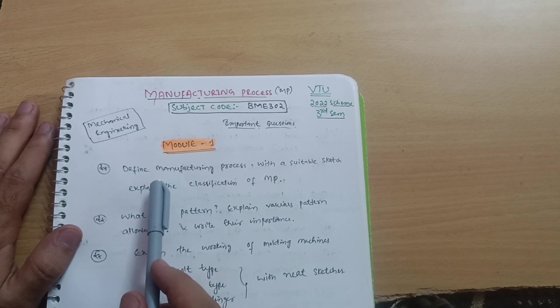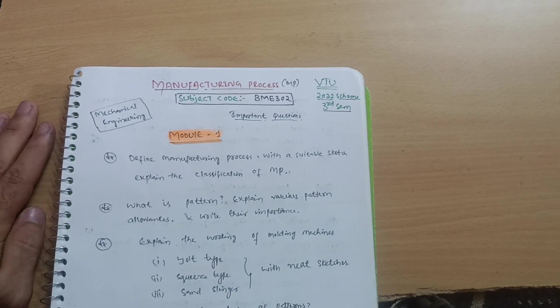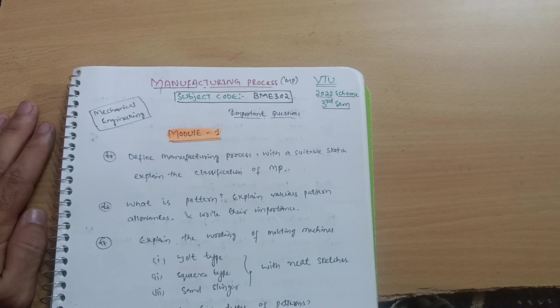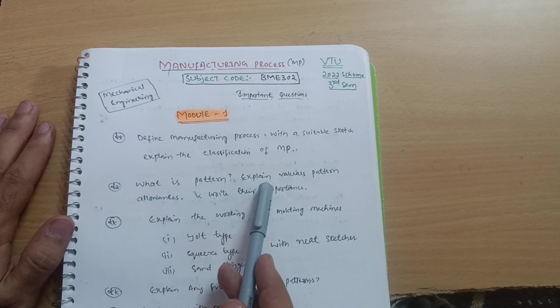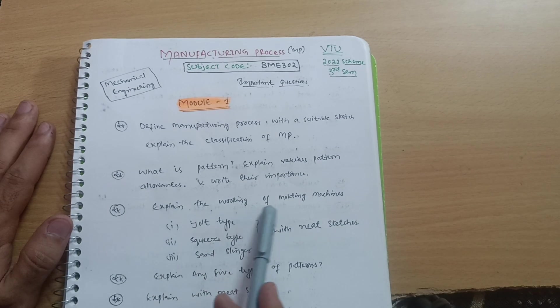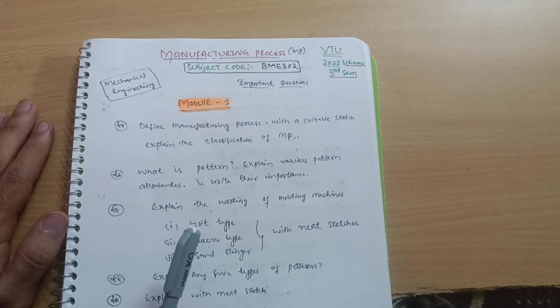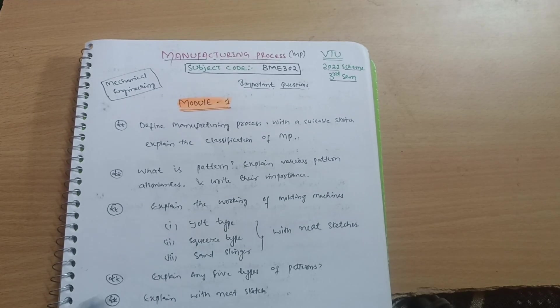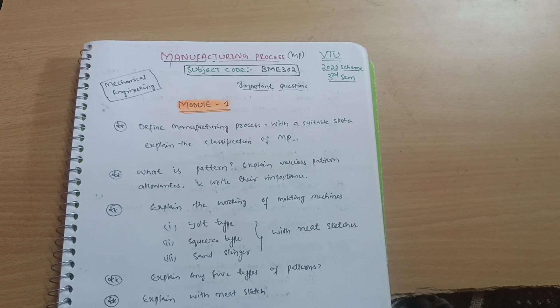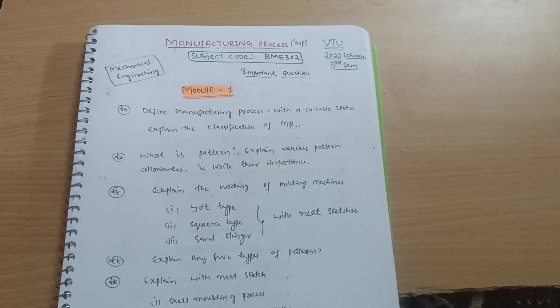With Module 1, some of the most important questions I will discuss are: define the manufacturing process with a suitable sketch and explain the classification of manufacturing process. Second, what is pattern? Explain various pattern allowances and write their importance. Next important question may be explain the working of molding machines like jolt type, sequence type machine molding machine, and sand slinger. You have to focus on neat sketches. As this is a theoretical or diagrammatic subject, you should focus more on diagrams. Practice more diagrams so that you will get marks. It consists of suppose if the question is 10 marks, definitely 5 marks will be for the diagram.